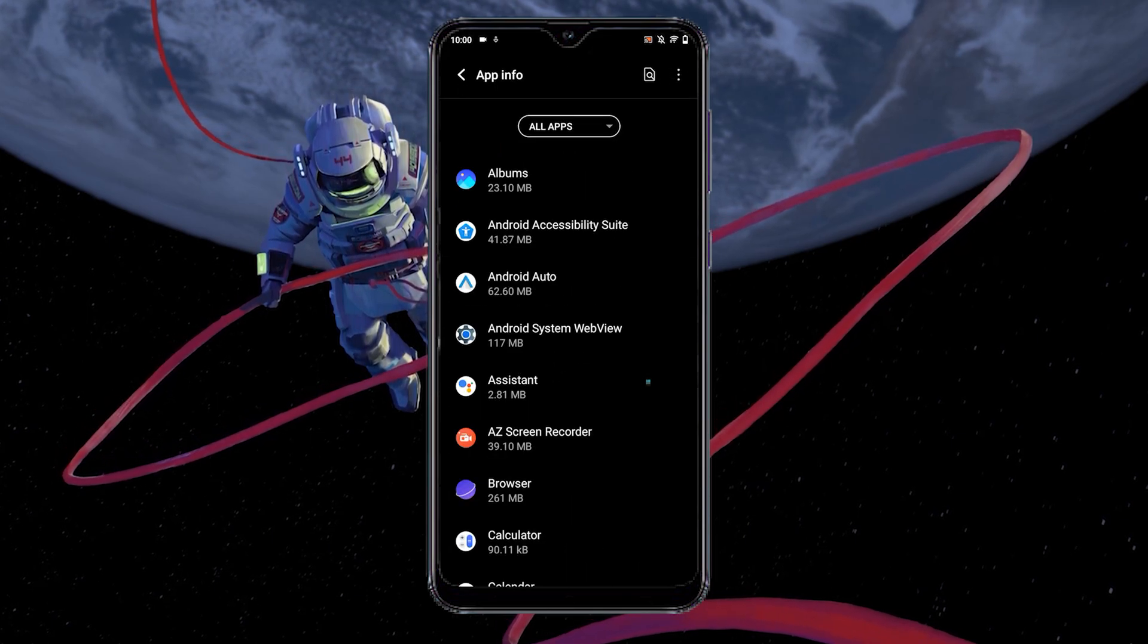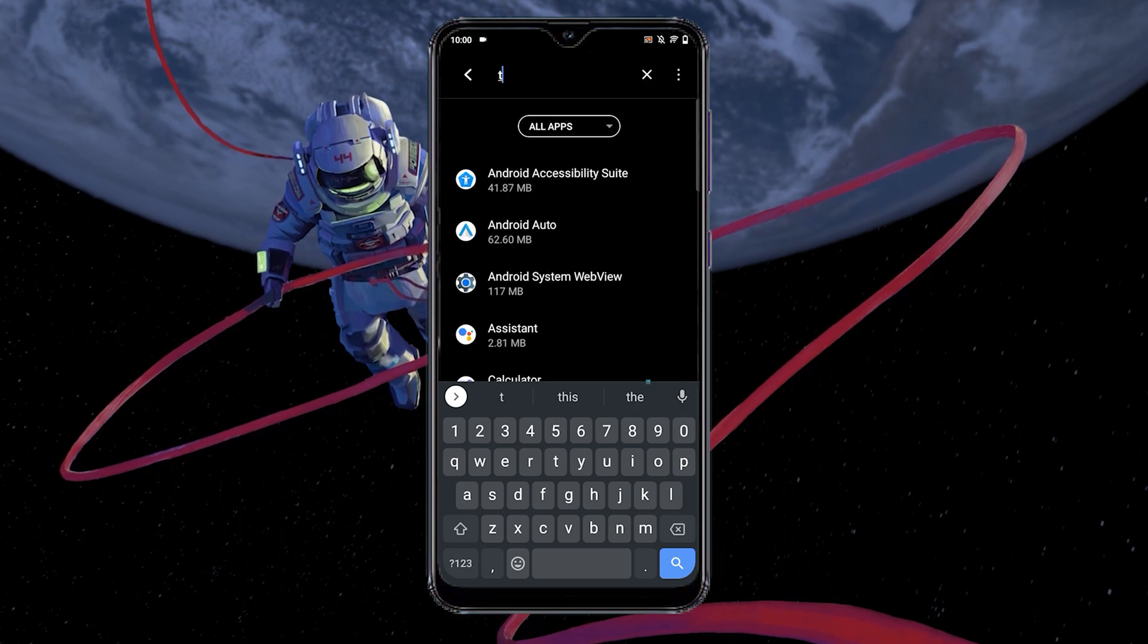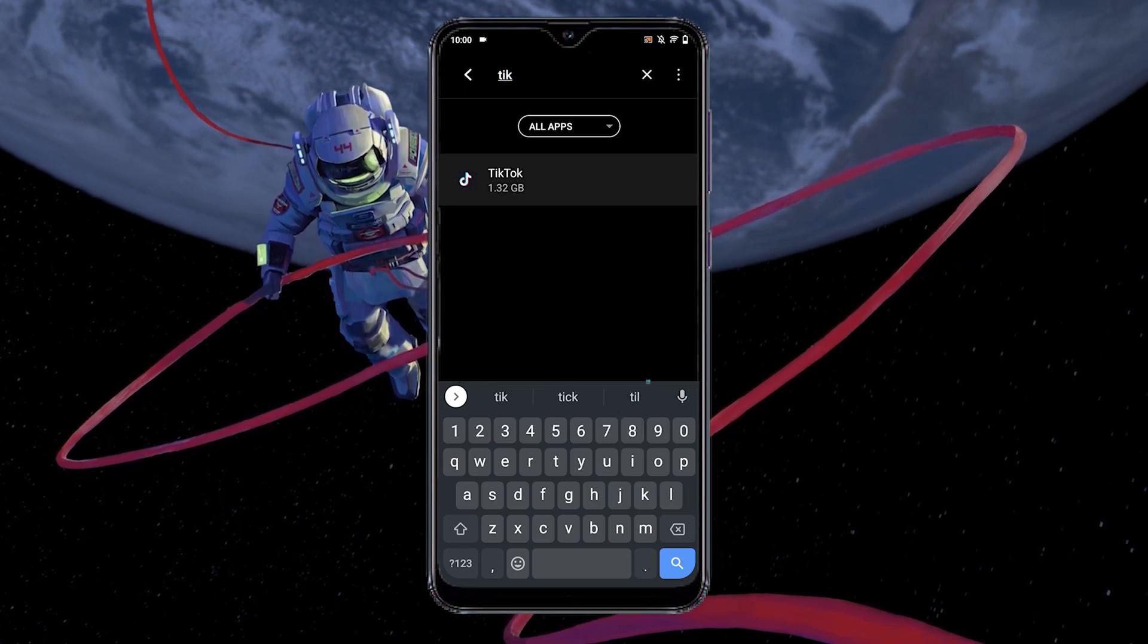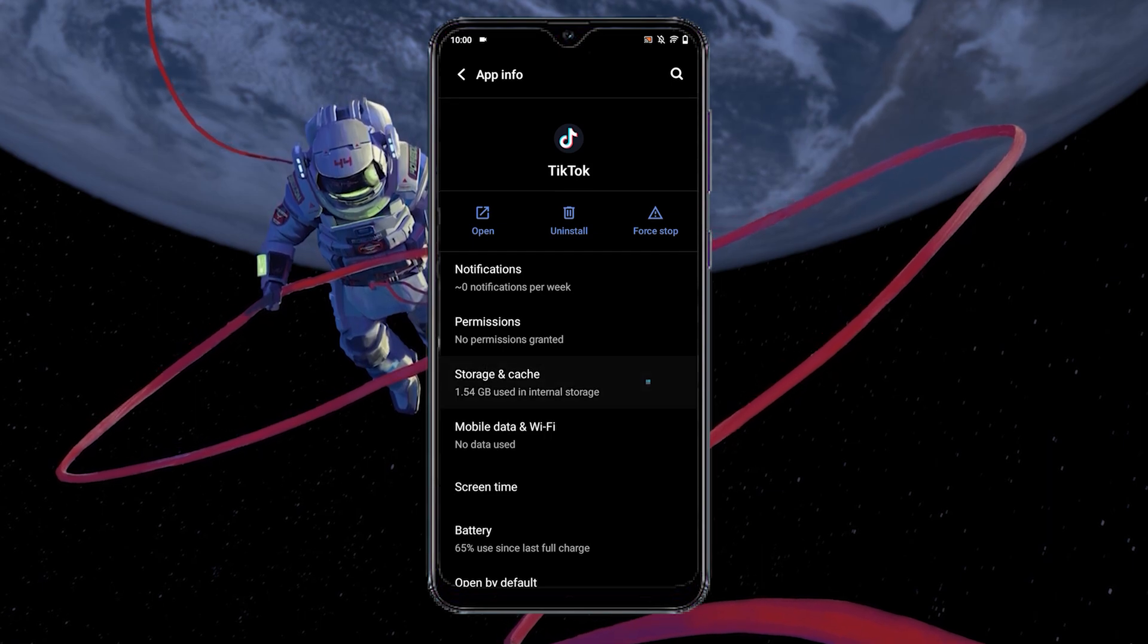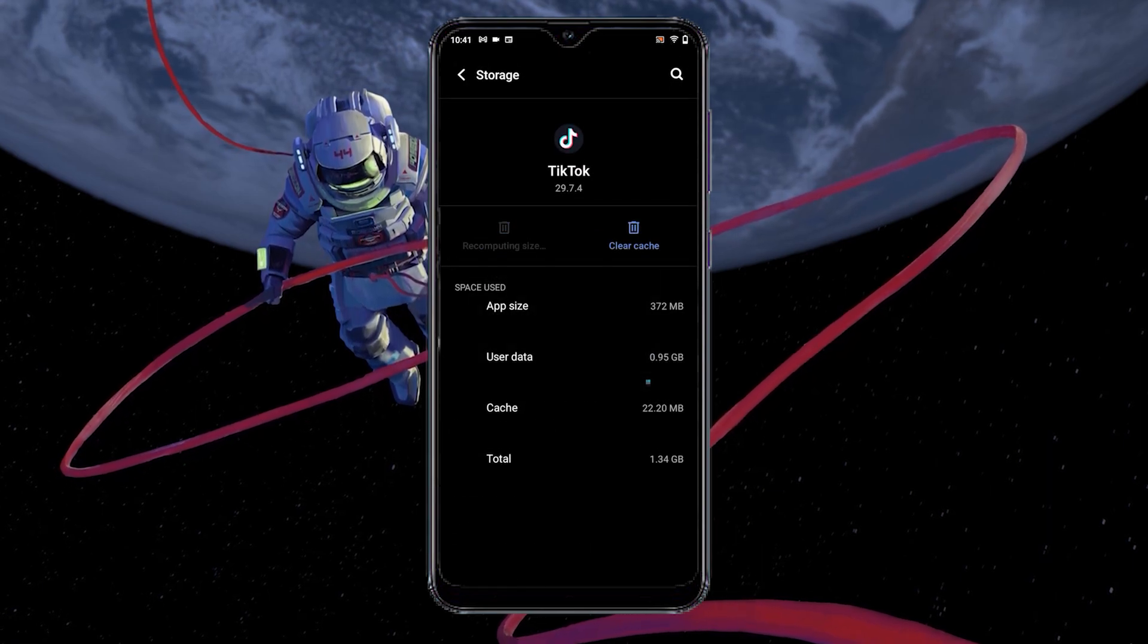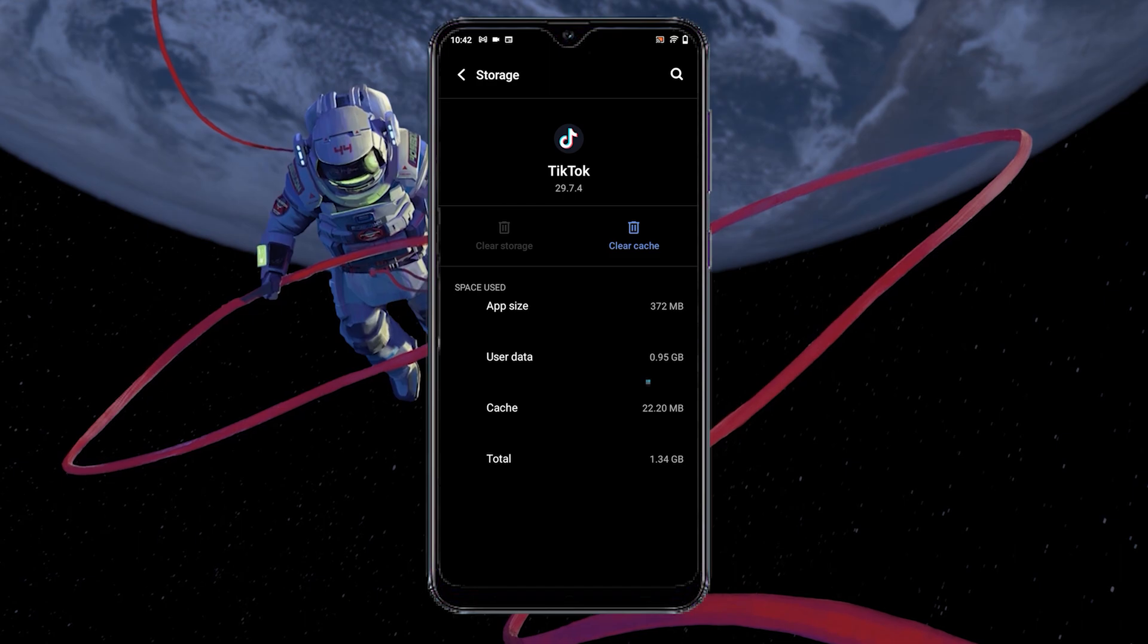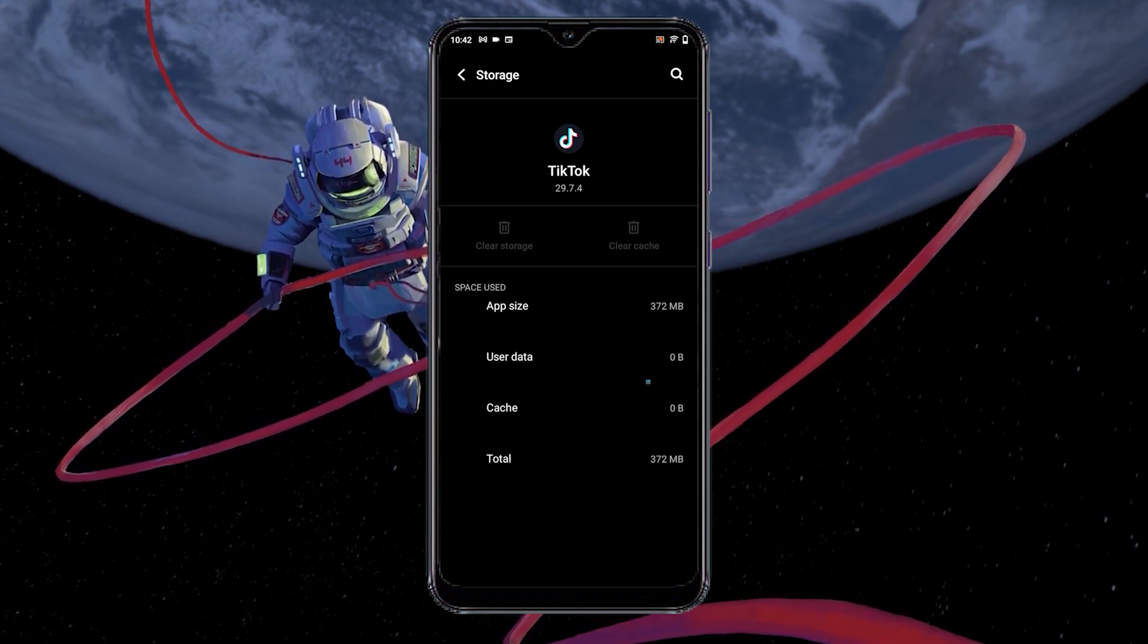Then tap on manage or all apps. After that, type TikTok in the search bar. Next, tap on storage and cache. Here, tap on clear storage or data to clear the cache and unnecessary data.